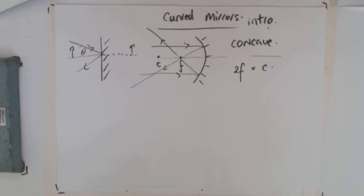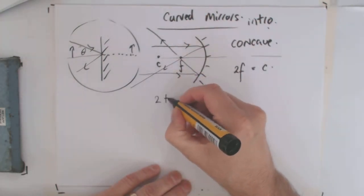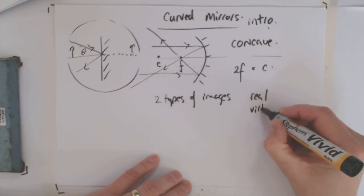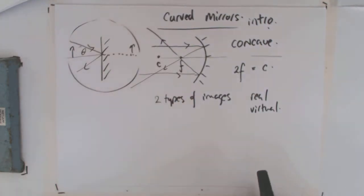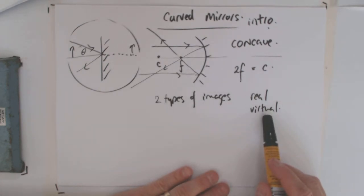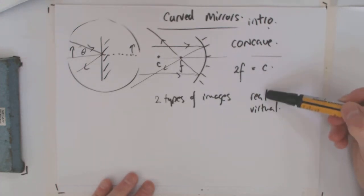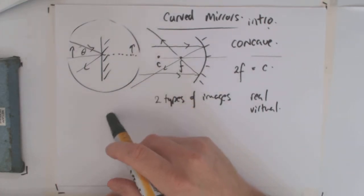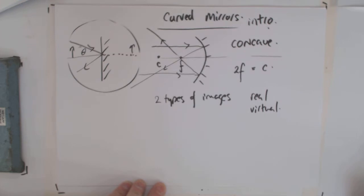This mirror ends up producing two types of images. We had one type with the flat mirror, but the concave mirror gives us two types — a real image and a virtual image. One thing you noticed about the plane mirror was that the virtual image was upright, and that tends to be the way virtual images are, so the virtual image in the concave mirror will also be upright. The real image is inverted. The real image occurs when the object is a little further out than the focal point, and when you get closer than the focal point, you get a virtual image.